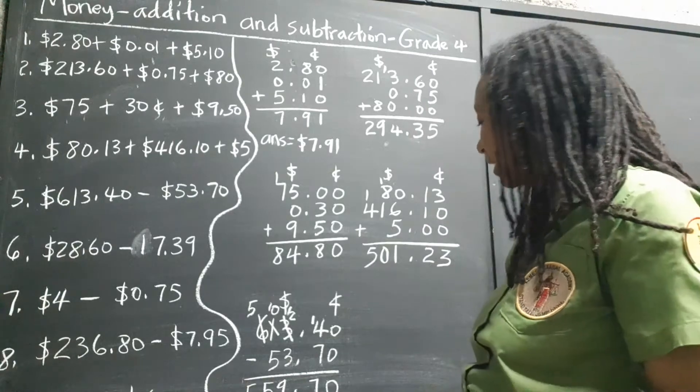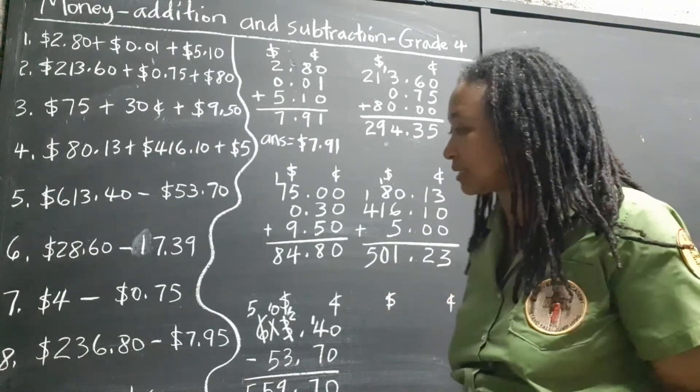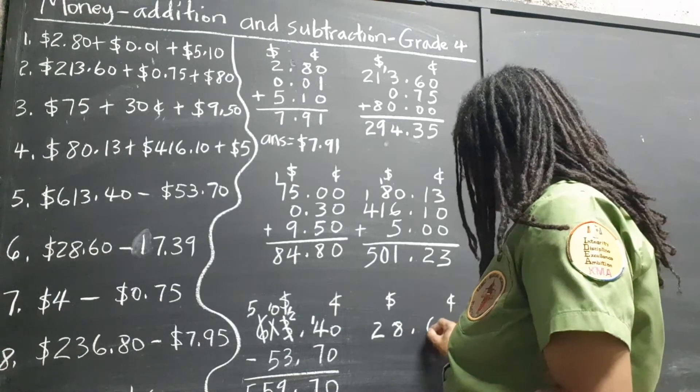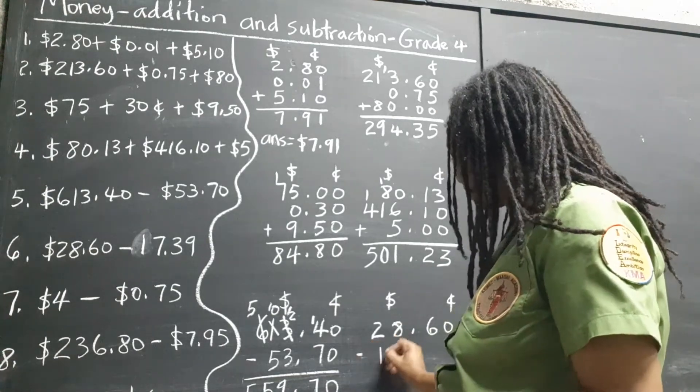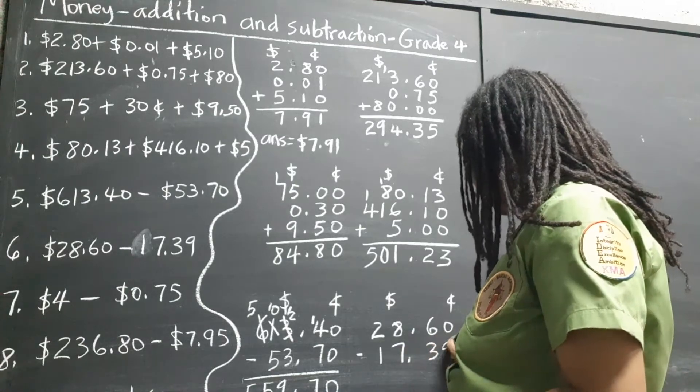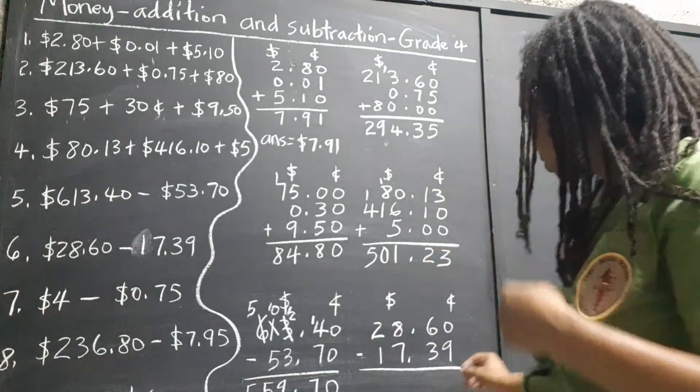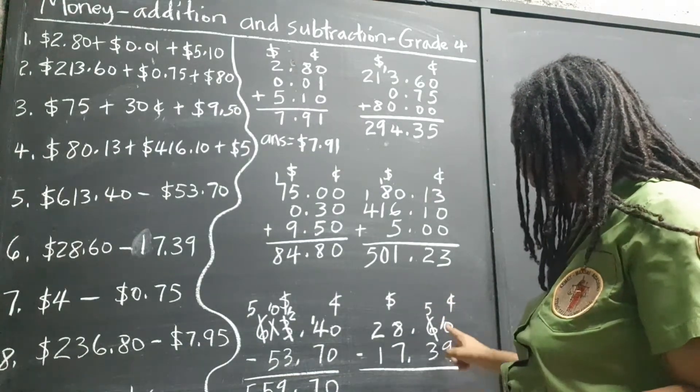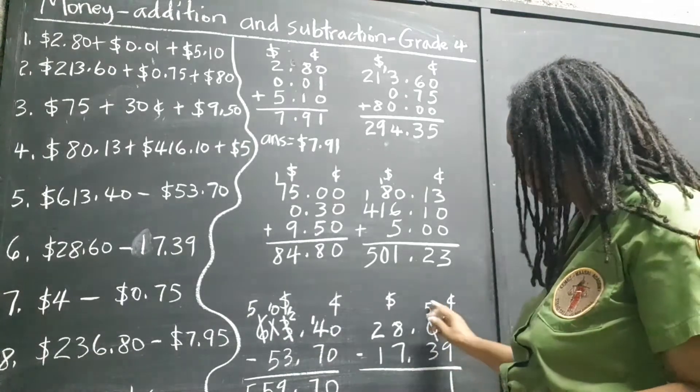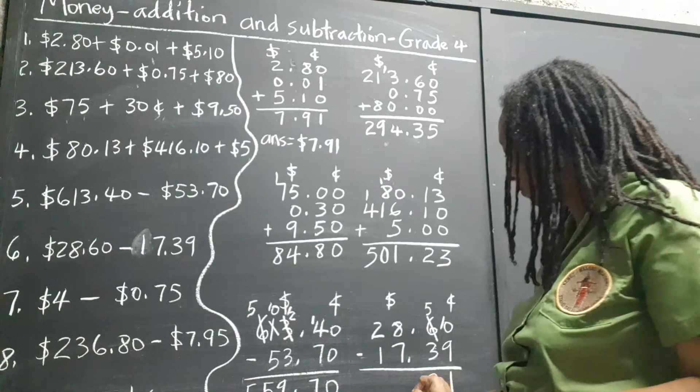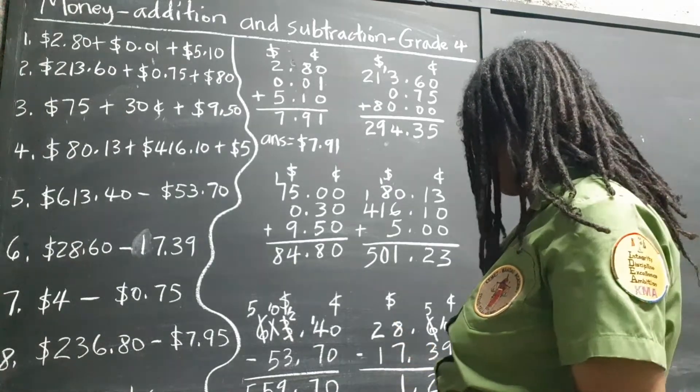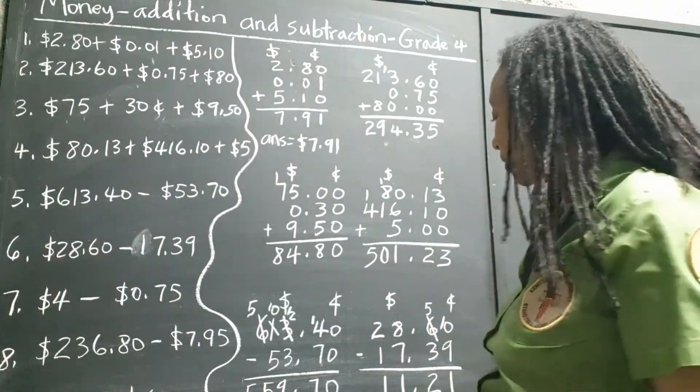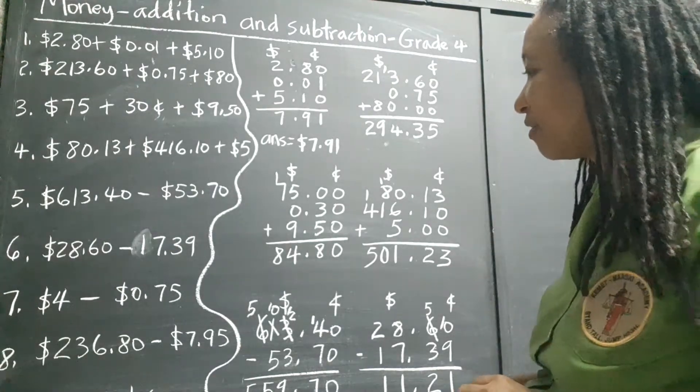Number 6. So that's $28.60 subtract $17.39. So we can't take 9 from 0. We're going to take 1. 10 take away 9, that's 1. 5 take away 3, that's 2. 8 take away 7, that's 1. 2 take away 1, that's 1. Basic principles of subtraction. So we have 3 to go.